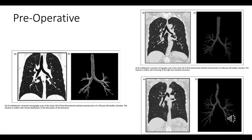Preoperative multi-detector CT scans of the chest with 3D reconstructions show: a 23-year-old healthy volunteer with the trachea in the middle and normal bronchial bifurcation; a 60-year-old healthy volunteer with the trachea in the middle but narrowing of the right main stem bronchus; and a 62-year-old male smoker with chronic emphysema where the trachea is displaced to the right with narrowing on the bronchial bifurcation, reflecting smoking history and age.